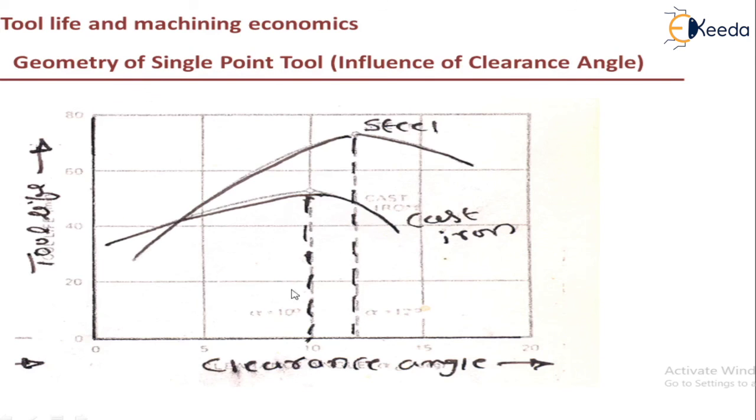And then, if clearance angle. So as we discussed along with the rake angle, the clearance angle is more, then the tool life is increasing. And then it is decreasing after per certain value. It is shown for cast iron and also steel.